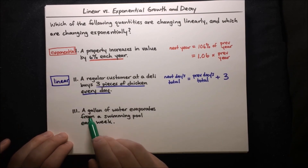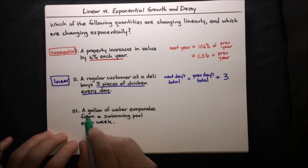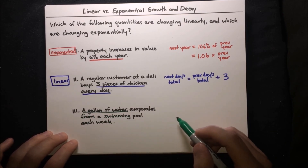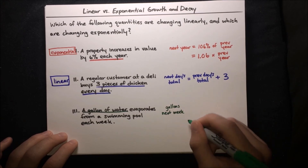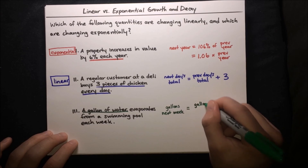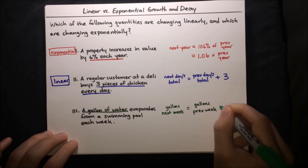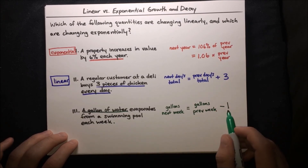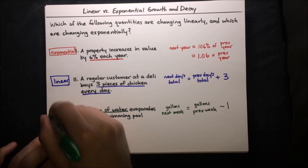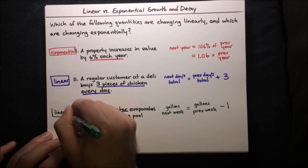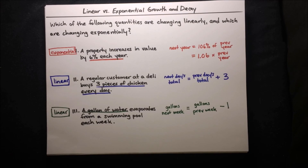Situation 3: a gallon of water evaporates from a swimming pool each week. Gallons next week equals gallons the previous week minus 1. We're subtracting the same amount — equivalently adding negative one — each time, so this is linear. Now we know how to tell the difference between linear versus exponential growth and decay, and we'll keep practicing with exponential functions to model real-world scenarios.